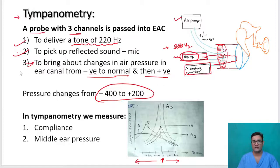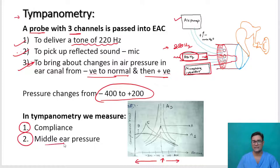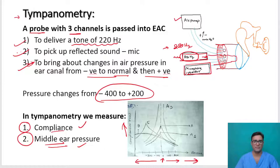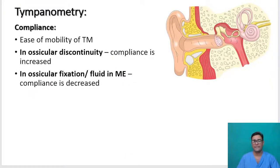In tympanometry, we measure only two things: compliance and middle ear pressure. Compliance will be on the x-axis and pressure will be on the y-axis. We will be talking about compliance and middle ear pressure in detail.